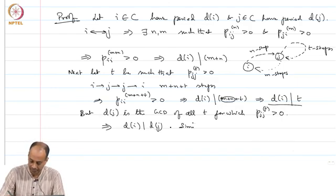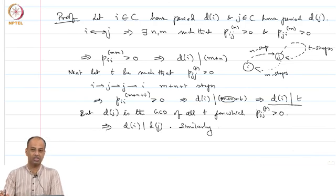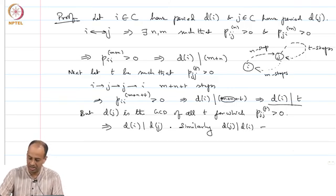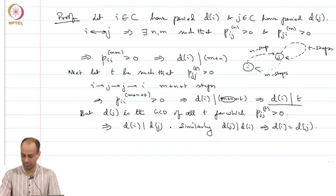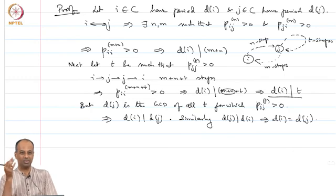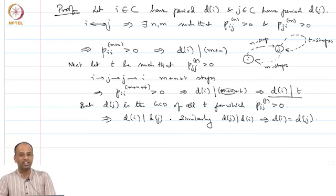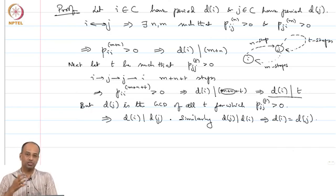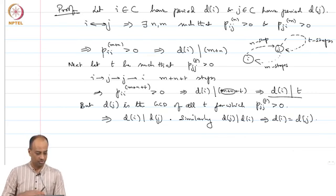Similarly, if you reverse the roles of i and j, you can prove that D(j) divides D(i). This only implies that D(i) equals D(j). So this is a combinatorial number-theory type of proof showing that all states in a class have the same period. Therefore, you can speak of the period of a class, or speak of the entire class as being aperiodic or periodic.